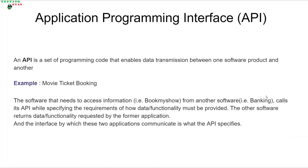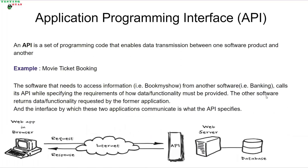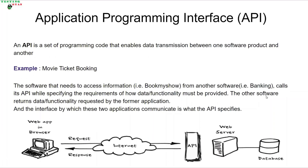So let us start. In the software industry, we will come across this term a number of times. The term is API or Application Programming Interface. So what is an API? What is the exact meaning of an API? API is simply a program or an intermediate or an interface which governs the communications between different applications.